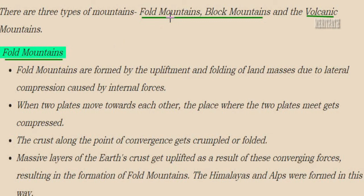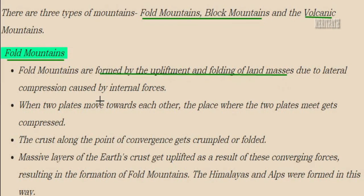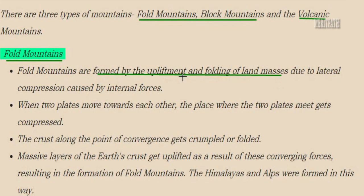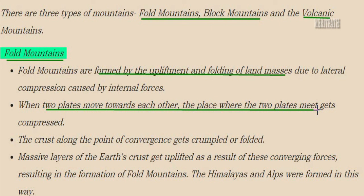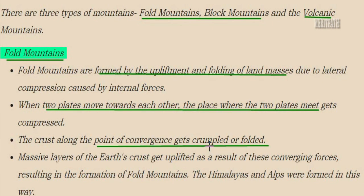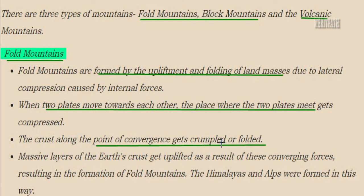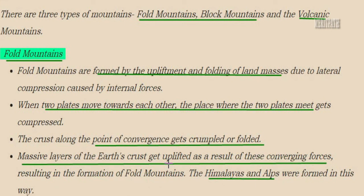There are three types of mountains: fold mountains, block mountains, and volcanic mountains. Fold mountains are formed by the upliftment and folding of the land mass due to lateral compression by internal forces. Imagine two plates moving toward each other and folding — the point where they meet gets crumpled and forms a mountain. The layers of Earth's crust get lifted and fold into each other, resulting in fold mountains. Examples include the Himalayas and the Alps.